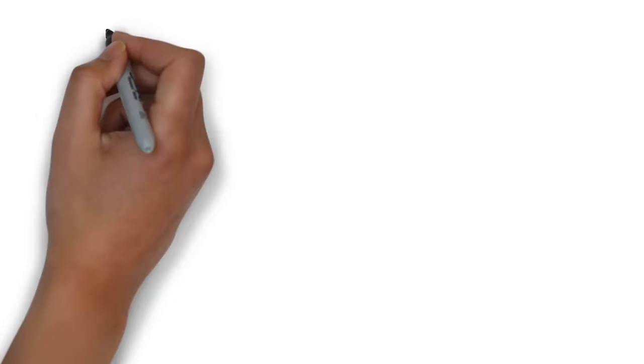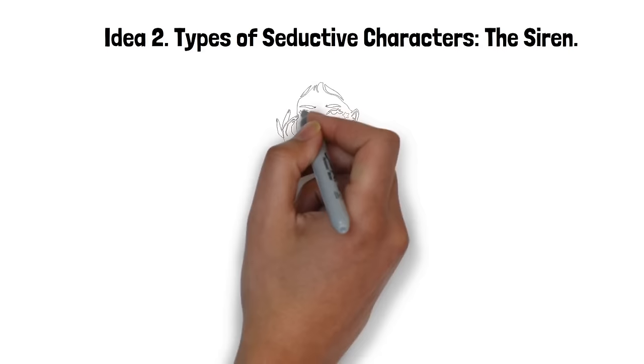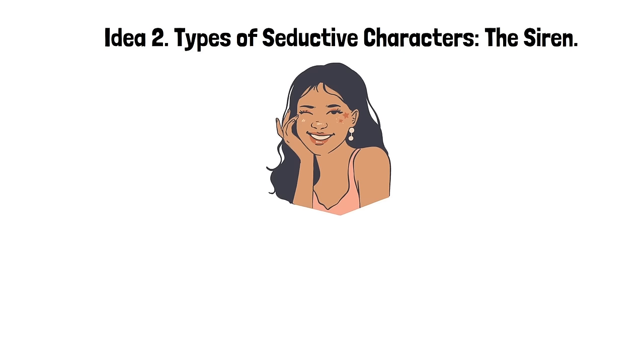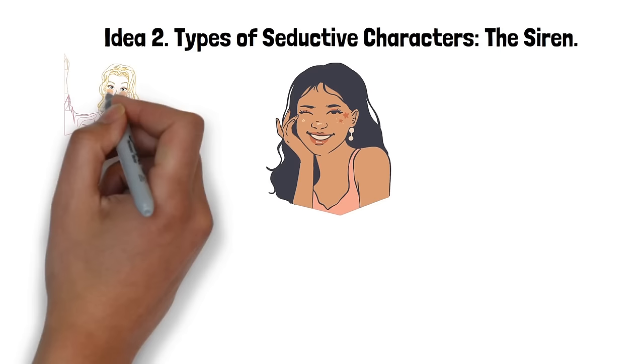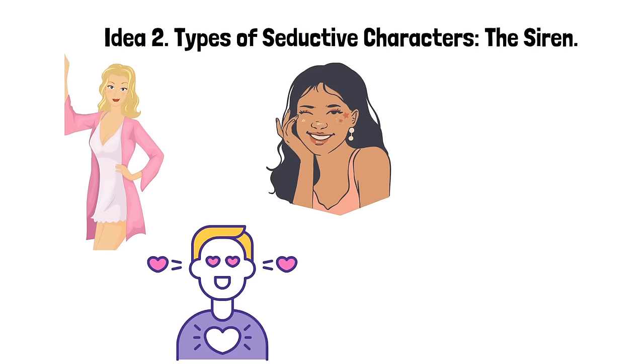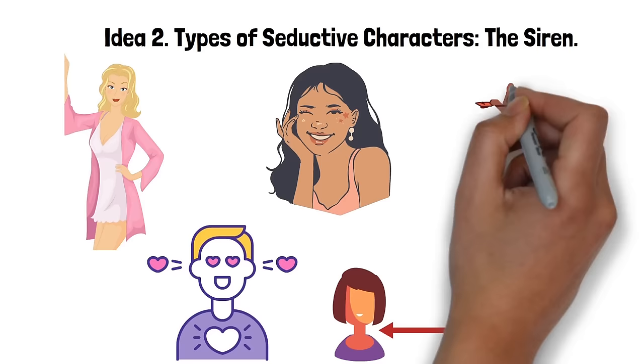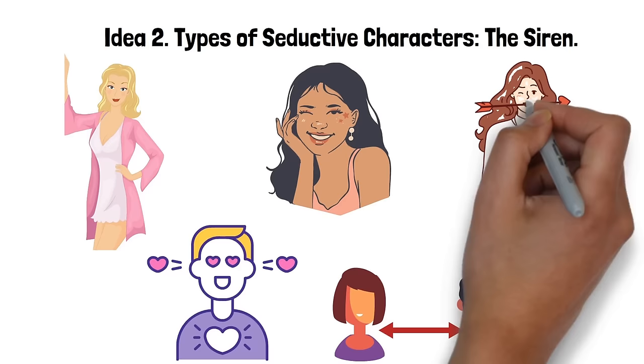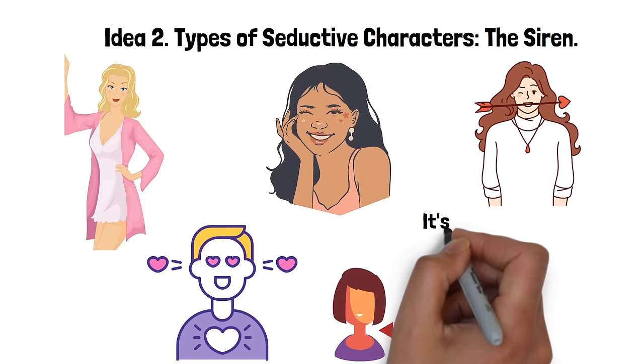Idea 2. Types of seductive characters. The siren. A siren, in terms of seduction, is usually a woman who is captivating and confident, oozing with a powerful and enticing aura. She's able to enchant people with her undeniable allure, largely driven by her strong sexual charisma. The allure of a siren is rooted in her capacity to make those around her feel singularly desired, intensifying their attraction to her. Even though she keeps a distance, preserving an element of unattainability, it only fuels the desire more. She plays with fantasies, creating a world so fascinating that one can't help but feel drawn into her spell. It's her skill in captivating the imagination that gives the siren her powerful charm.